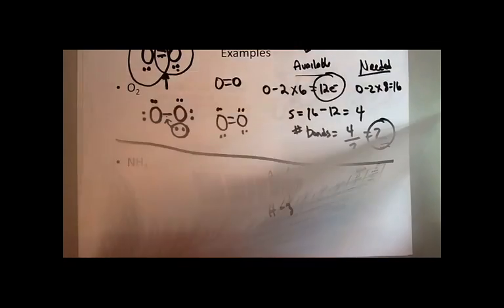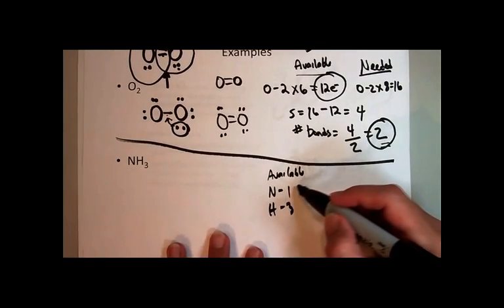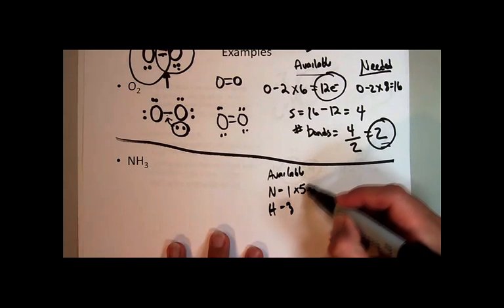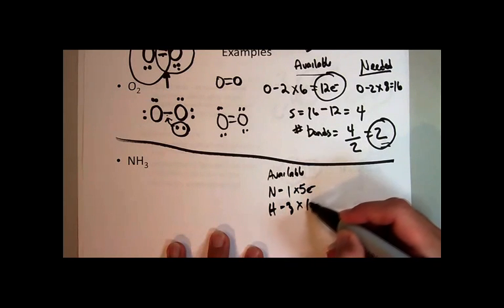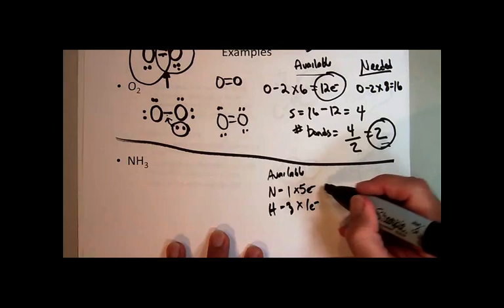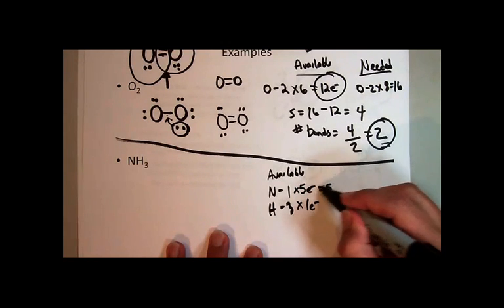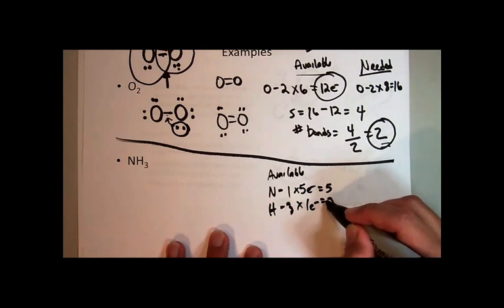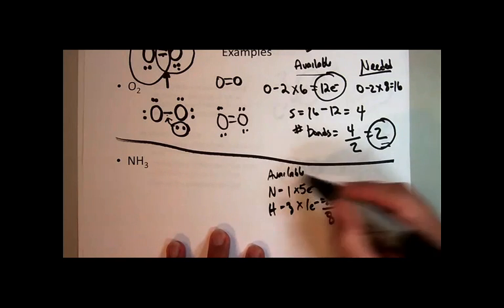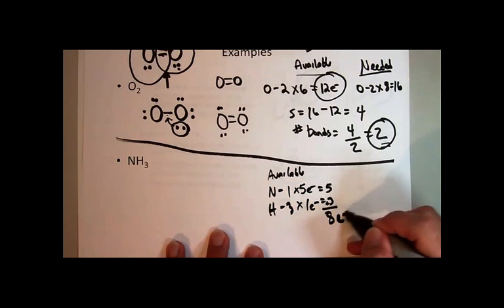because it's in group one, for hydrogen. So nitrogen has five valence electrons, and hydrogen has one valence electron. So my total number of available is just going to be five plus three is eight available electrons.